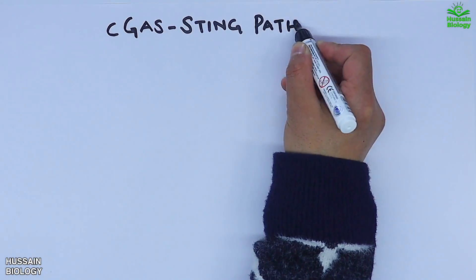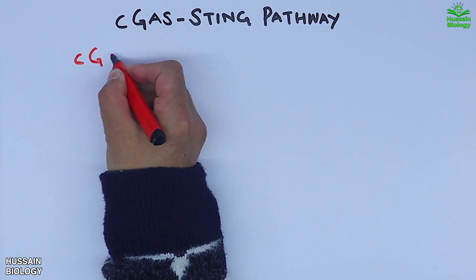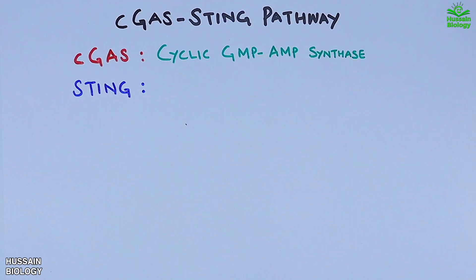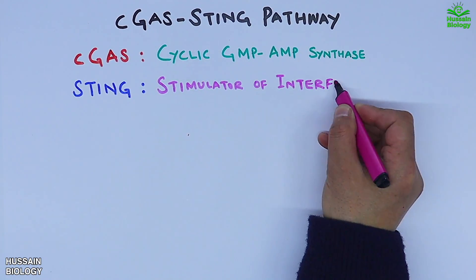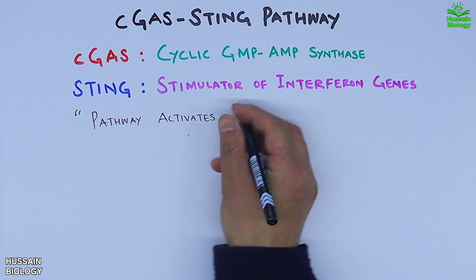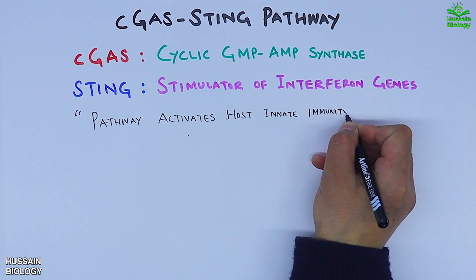In this video we'll be discussing the cGAS-STING pathway. cGAS stands for cyclic GMP-AMP synthase and STING stands for stimulator of interferon genes. This signaling pathway activates host innate immunity against a DNA-containing pathogen infection.